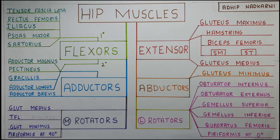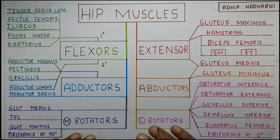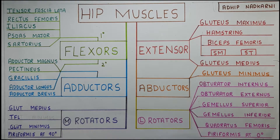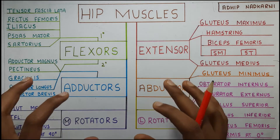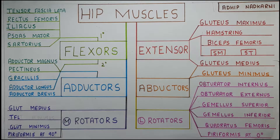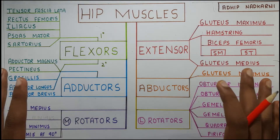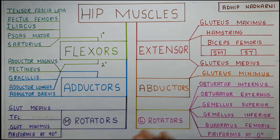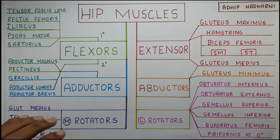In this video we are going to talk about the muscles around the hip joint, or you can also say the kinetics of the hip joint — the reason for the movement that occurs around the hip joint, that is the muscles. I would say I have done a pretty fair job at classifying these muscles and making some mnemonics so that you can remember these muscles very easily.